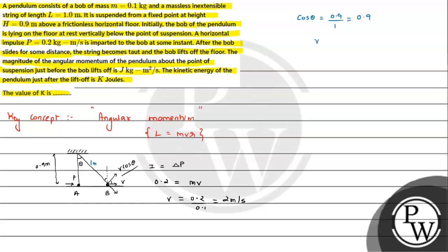Now we can write cos theta value. V that is 2, cos theta value is 0.9, so this will be 1.8 meter per second. Now we have to calculate at lift off. So we have kinetic energy, we have to calculate half m V dash squared.